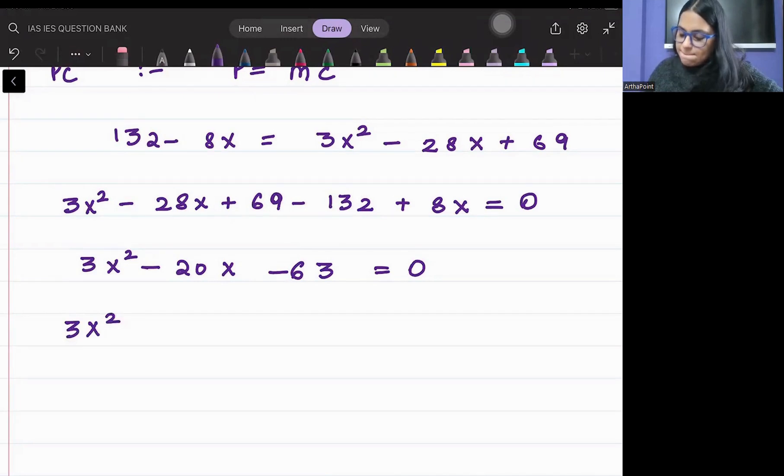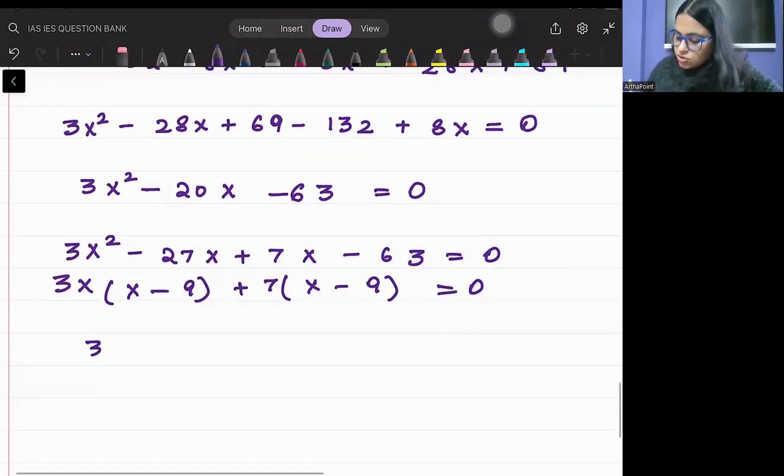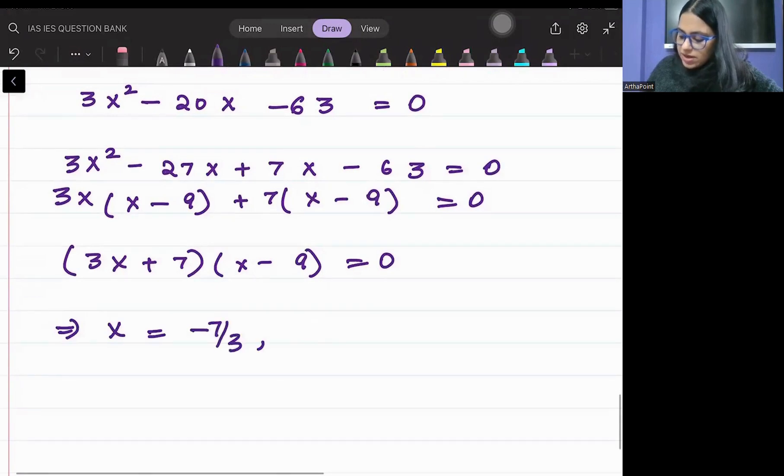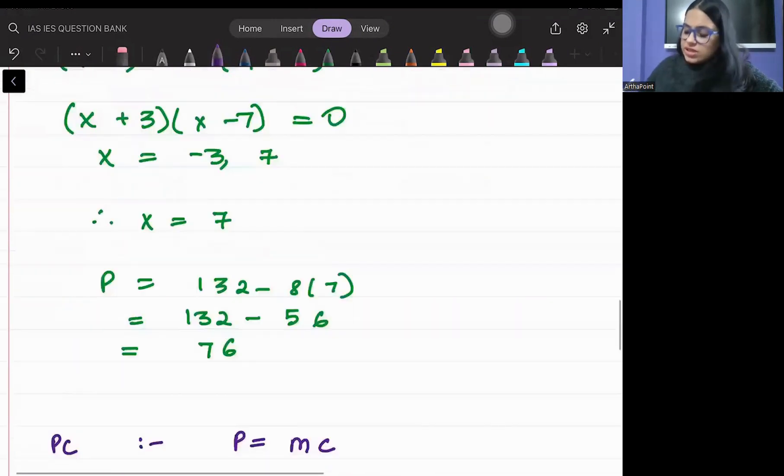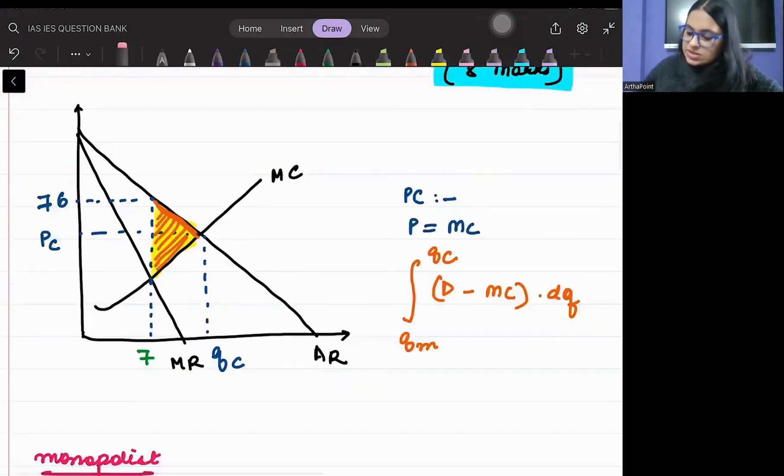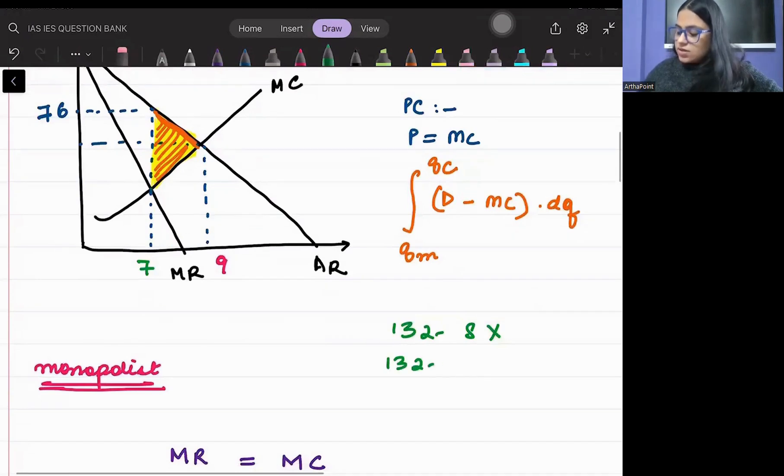So we have to create its factors. This will be 3X square minus 27X plus 7X minus 63 equal to 0. 3X into X minus 9 plus 7 into X minus 9 is 0. So 3X plus 7 times X minus 9 is 0. So either X will be minus 7 by 3 or X will be 9. X cannot be negative, so therefore X will be 9. So quantity sold by perfect competition I have got as 9. What will be the price? Price was 132 minus 8X, so it is going to be 60. So your price will come down as 60.